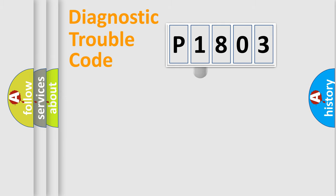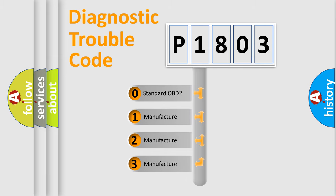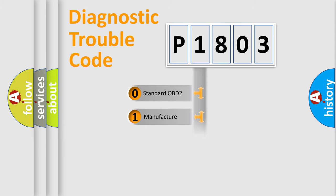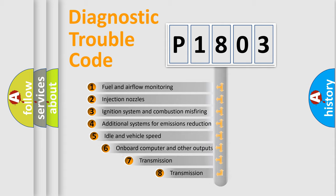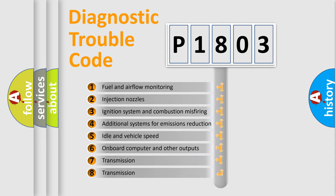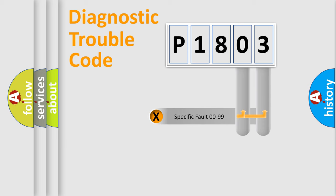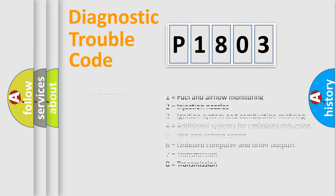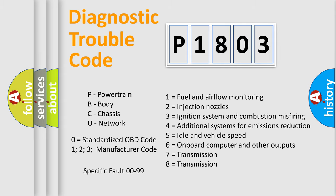This distribution is defined in the first character of the code. If the second character is expressed as zero, it is a standardized error. In the case of numbers 1, 2, or 3, it is a manufacturer-specific error. The third character specifies a subset of errors. The distribution shown is valid only for the standardized DTC code. Only the last two characters define the specific fault of the group. Note that this division is valid only if the second character code is expressed by the number zero.